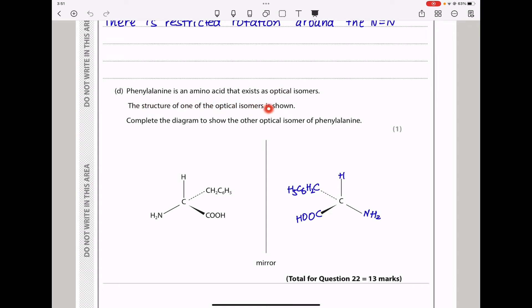Phenylalanine is an amino acid that exists as optical isomers. The structure of one optical isomer is shown. Complete the diagram to show the other optical isomer. Because optical isomers are mirror images of each other, we must draw the structure exactly as this but as if there is a mirror. The hydrogen comes first, the two oxygens, then carbon. Here the hydrogen comes first, the six carbons, two hydrogens, then carbon, then the hydrogen. On the other side, nitrogen first and two hydrogens. This is the structure you must have drawn. This brings us to the end of Question 22.